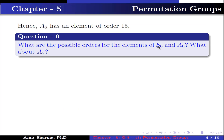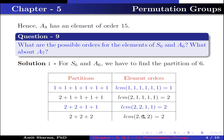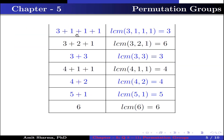Question 9: What are the possible orders for elements of S6 and A6? What about A7? For S6 and A6 we have to find the partitions of 6. The partitions of 6 and their corresponding element orders are: (1+1+1+1+1+1) with LCM 1; (2+1+1+1+1) with LCM 2; (2+2+1+1) with LCM 2; (2+2+2) with LCM 2; (3+1+1+1) with LCM 3; (3+2+1) with LCM 6; (3+3) with LCM 3; (4+1+1) with LCM 4; (4+2) with LCM 4; (5+1) with LCM 5; and (6) with LCM 6. These are the possible orders of elements in S6.